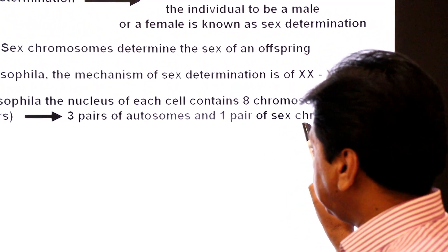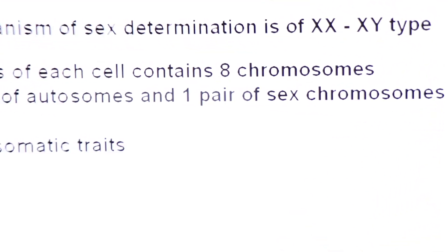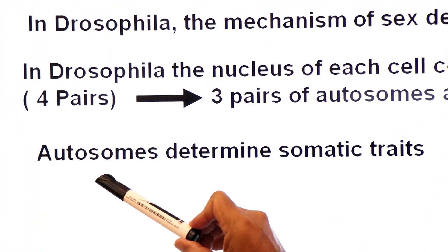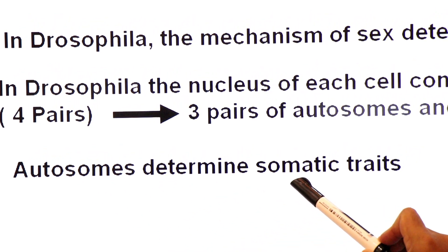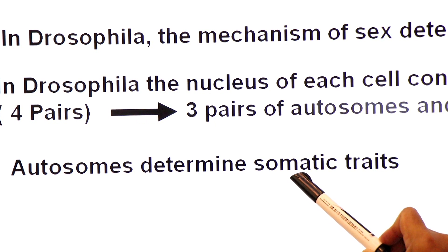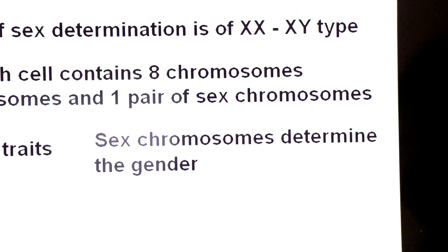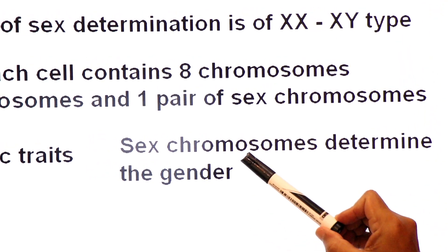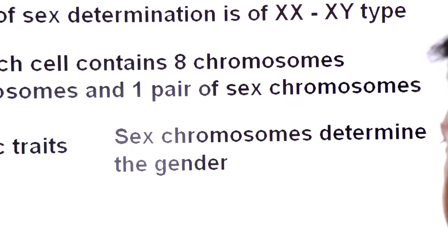Ab hum distinguish karenge what is the function of autosomes and what is the function of sex chromosomes. Autosomes determine somatic traits — body traits — but they are not involved in sex determination. They will not determine the gender. Sex chromosomes determine the gender — what will be the sex of an embryo.